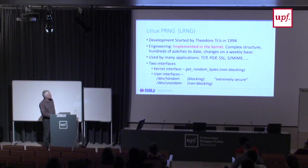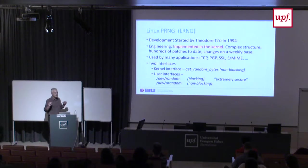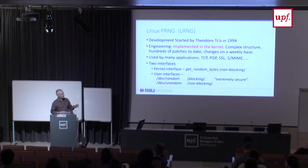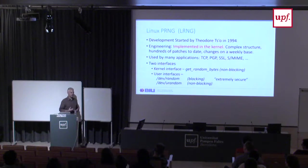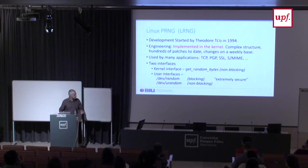There are two interfaces: one for kernel functions, another for users. Users have two interfaces: /dev/random and /dev/urandom. /dev/random is a blocking interface, supposed to be more secure — it doesn't provide output unless it thinks it has enough physical entropy. /dev/urandom always provides output. People don't like using /dev/random because it might just block. If you have good seeding, you don't need /dev/random — you can just use the pseudo-random number generator.